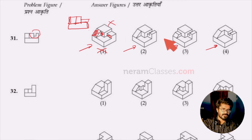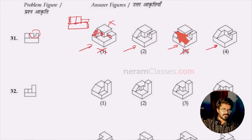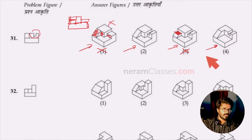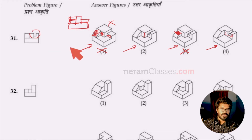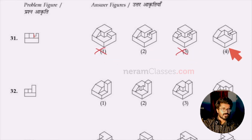We don't have to sketch all three options — we just look at key features. Option three is wrong because there should be a line here since it has a flat surface, but that line is not present in the question. The difference between three and two is that line: option three has it but the question does not. So option one is wrong, three is wrong, four is wrong because there's no line there, and two is the correct answer.